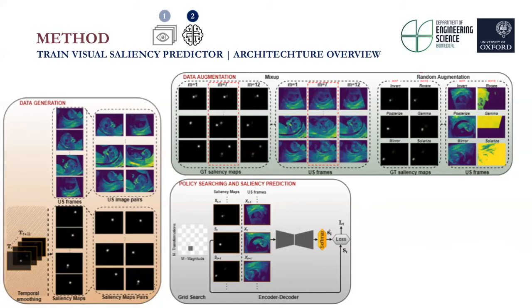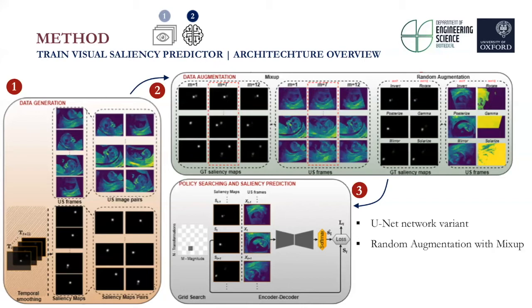For step two, training a model to predict visual saliency maps, this is the overview of our architecture. The method is divided into blocks: data generation, data augmentation, policy searching, and saliency prediction. We propose a U-Net network variant for single frame saliency prediction and employ random augmentation with mix-up as part of the data augmentation strategy. Input frames are pre-processed; the model is trained using a U-Net variant with a softmax activation function and Adam optimization. The loss function used is Kullback–Leibler divergence loss (KLD), back-propagating the KLD between the target and the predicted saliency maps.